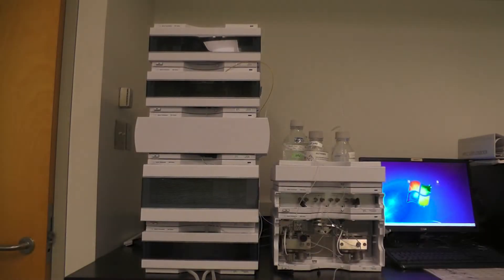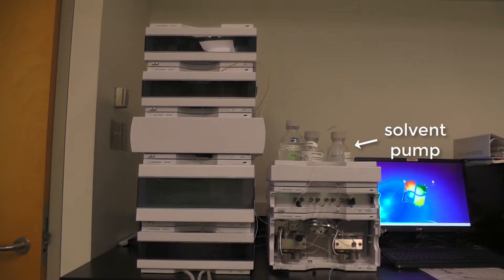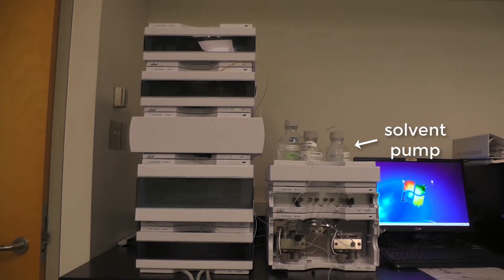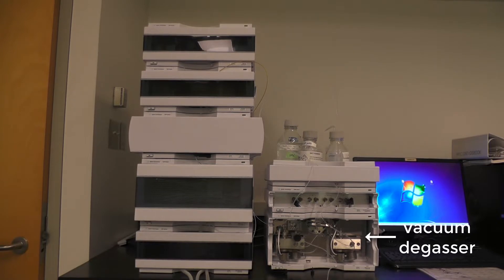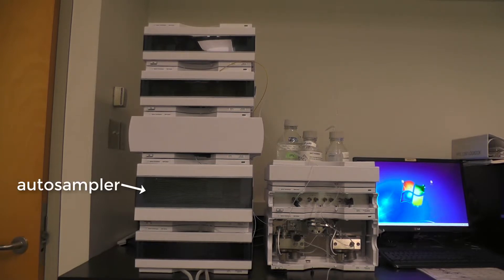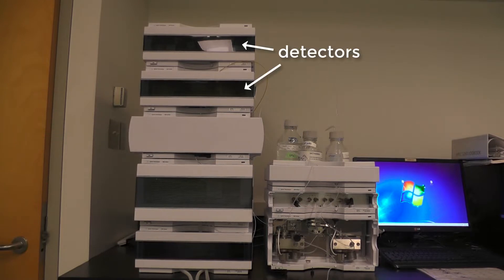The HPLC system consists of several modules including a solvent pump with solvent cabinet, a vacuum degasser, an auto sampler, a column compartment, and two detector modules.